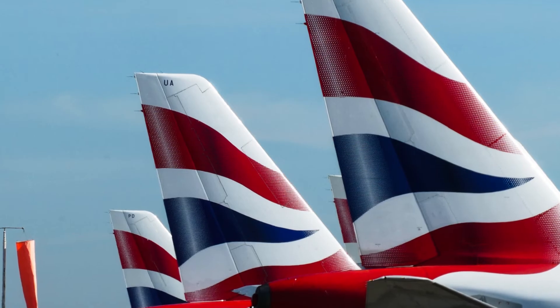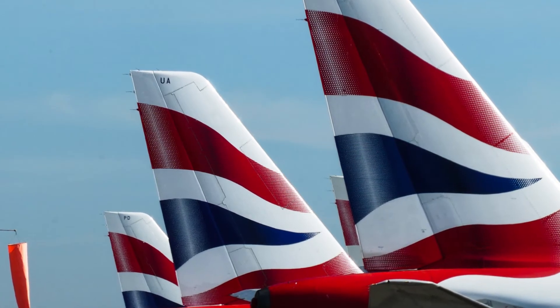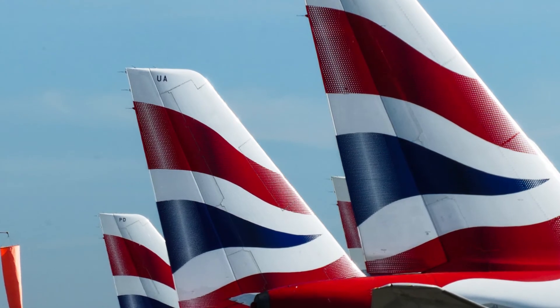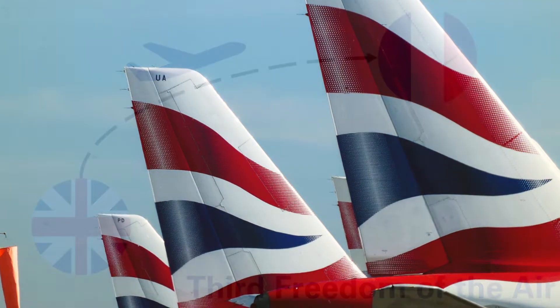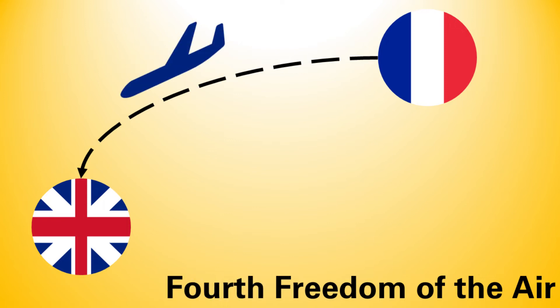Going on with the third and fourth freedom of the air — these grant an airline the right to operate a direct flight to and from its home country. For a British airline operating a flight from London to Paris, the third freedom will ensure that the airline can carry passengers from London to Paris, and the fourth one allows it to carry passengers back from Paris to London.